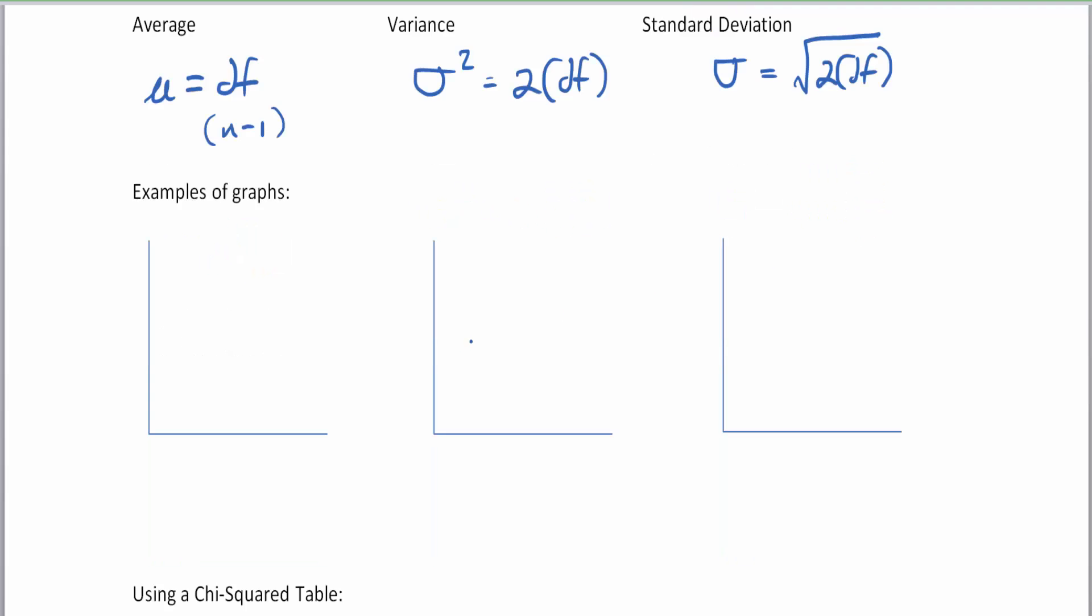The chi-squared graphs are skewed to the right, and there is a different graph for each degree of freedom. We'll start with 2 degrees of freedom, which is a sample size of 3, and it looks like this inverse graph. The 0 is all the way on the left-hand side. Unlike normal curves where 0 is in the middle, these test statistics will always be positive.